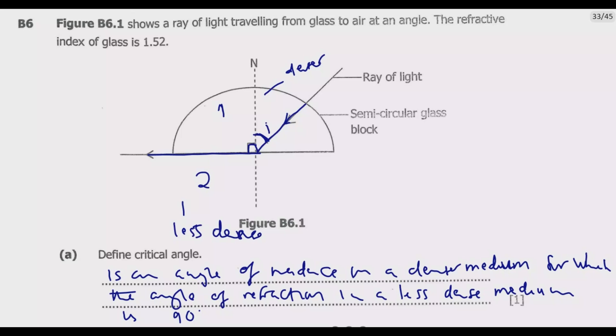By Snell's law, which describes the law of refraction, we know that the refractive index of medium one relative to medium two is equal to sine of angle of refraction over sine of angle of incidence. This angle of refraction R is equal to 90 degrees, then I is equal to the critical angle we are looking for. N1 is the refractive index of grass, which is 1.52. N2 is the refractive index of air, which is 1.